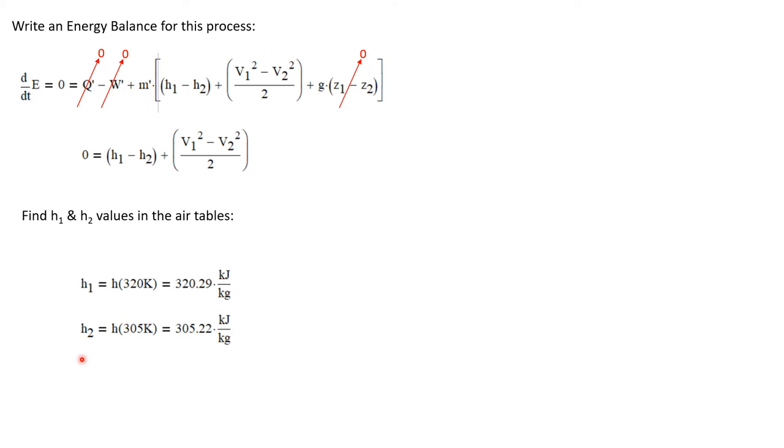And state two, I know the air temperature is 305K. And so H2 is 305.22 kilojoules per kilogram.